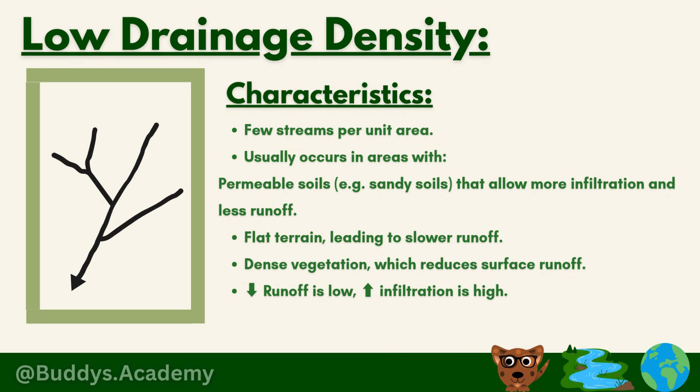So now let's take a look at your low drainage density in deeper detail. The first characteristic is that there are a few streams per unit area, meaning the land is not going to have a lot of rivers or streams close together — they are going to be quite far apart. The next characteristic is that it usually occurs in areas with permeable soils, such as sandy soils, which allow more infiltration and less runoff.